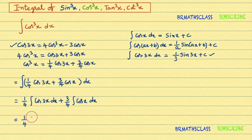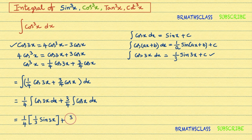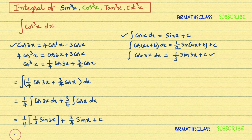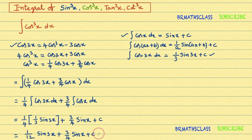So the integral of cos³x dx equals (1/4) × (1/3)sin3x + (3/4) × sinx + c, which simplifies to (1/12)sin3x + (3/4)sinx + c.